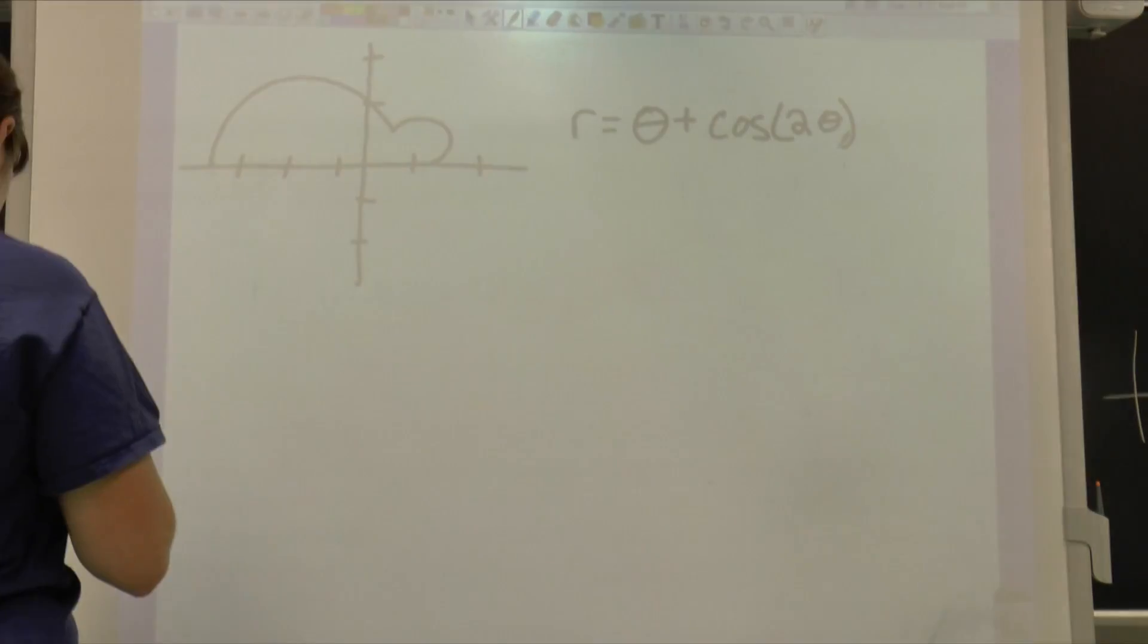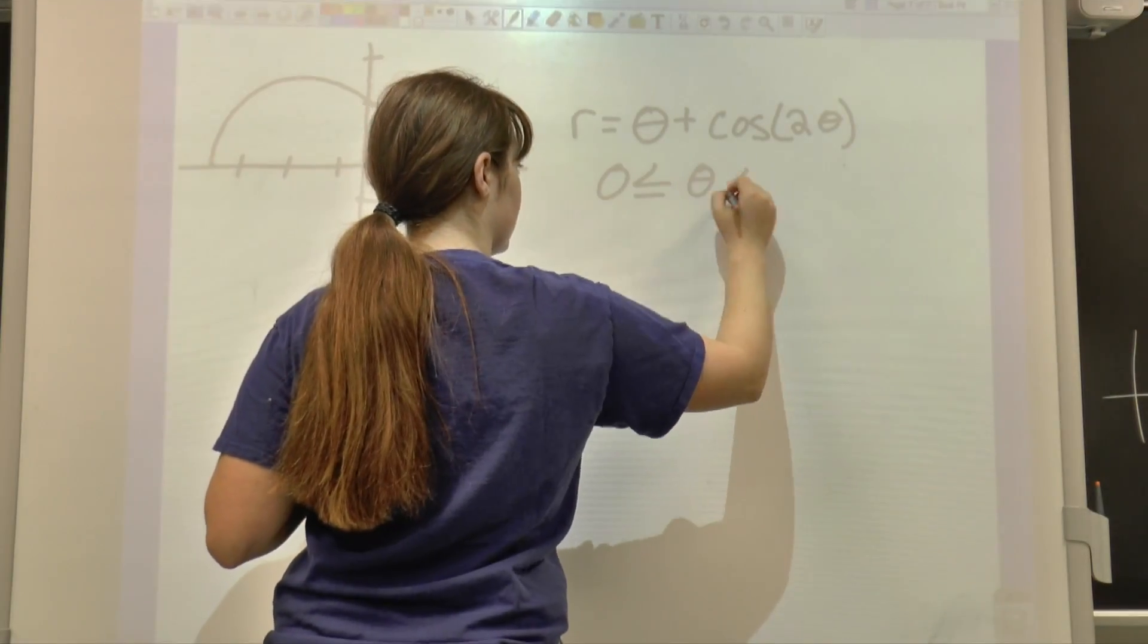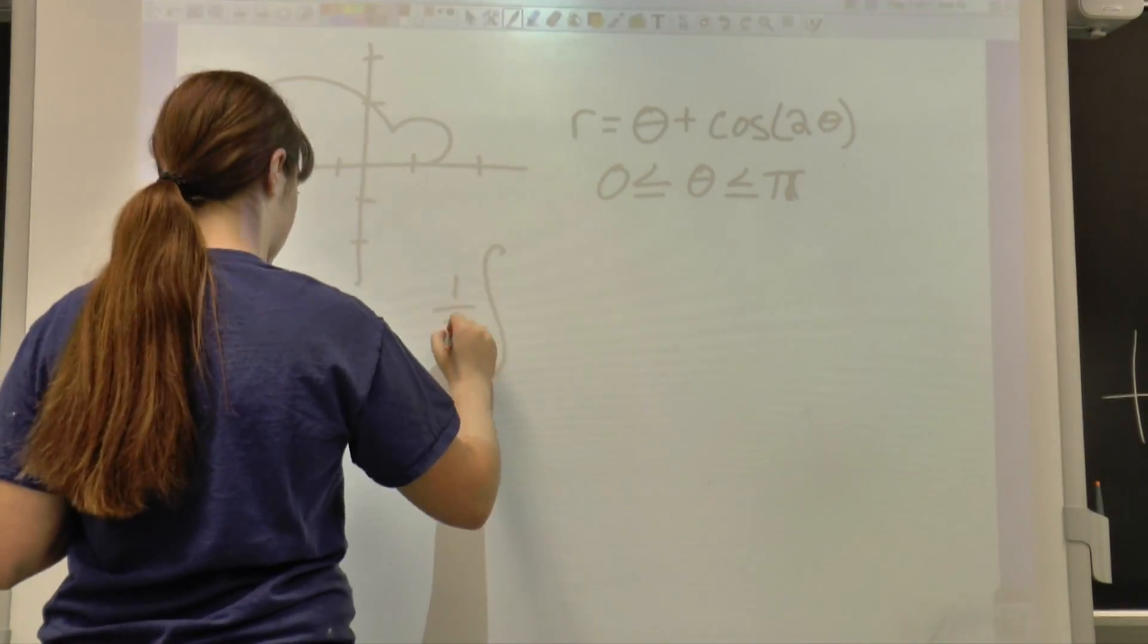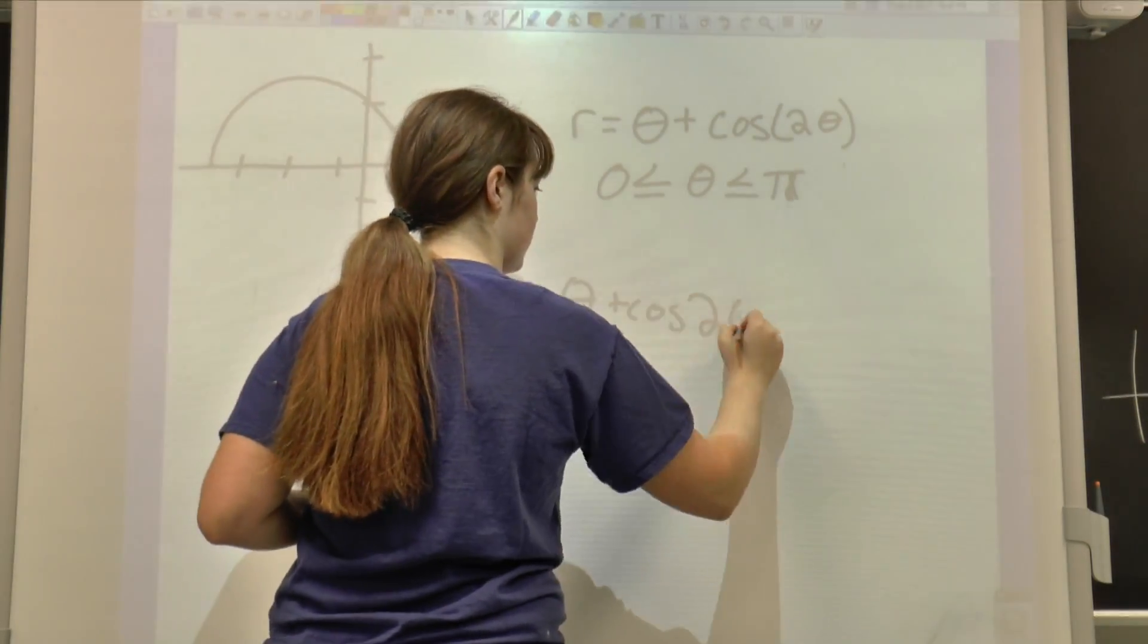The equation is the polar graph r equals theta plus cosine 2 theta. To find the area, I just used the formula 1 half, the integral from 0 to pi of r squared d theta. This gives us an area of 5.95 square miles.